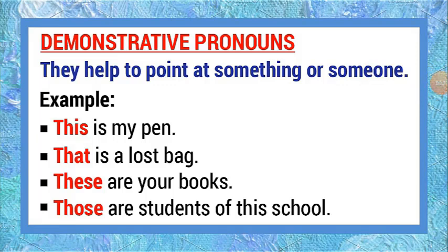Demonstrative pronouns. They help to point at something or someone. For example: 'This is my pen.' 'That is a lost bag.' 'These are your books.' 'Those are students of this school.' We use 'this' to point at a person or thing that is near us, and 'that' to point at a person or thing that is far from us. We use 'these' to point at people or things that are near us, and 'those' for things that are far from us.